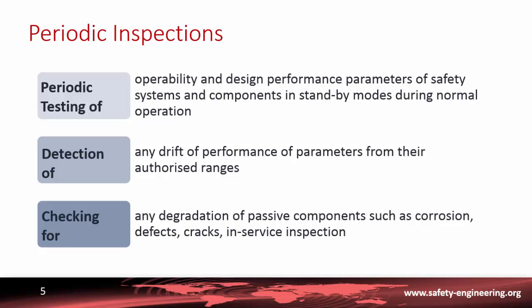Periodic inspection tests also serve to detect any drift in performance parameters from their authorized range — even if set points are complied with, any evolution of the parameters should be accounted for and corrections made. For passive systems and passive components, these periodic inspections also serve to detect any potential degradation by phenomena such as corrosion and cracks. This is what we call in-service inspection.